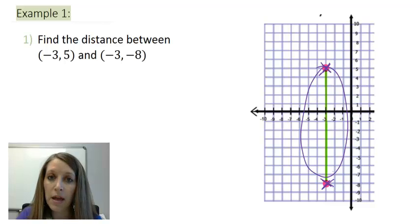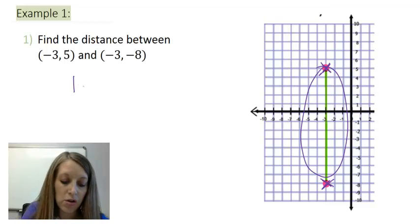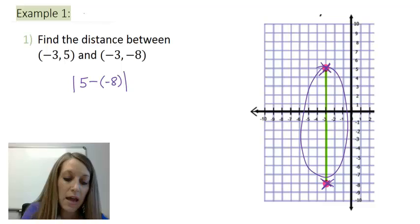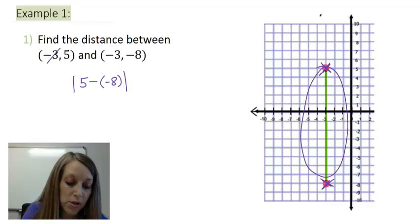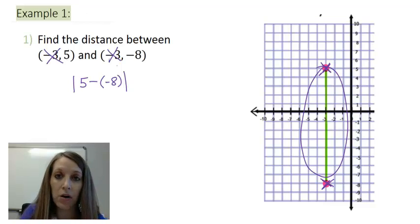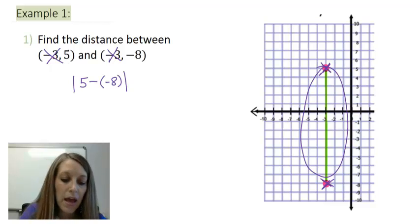Now, I can count that by counting the tick marks in between these two points, or I can do that formula that I just showed you, the absolute value of this y distance minus the absolute value of my second y distance. And again, since my x values are the same, those don't really matter in this example, and I'm just calculating the distance between my two y values.